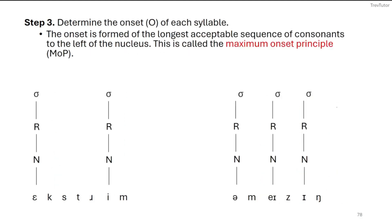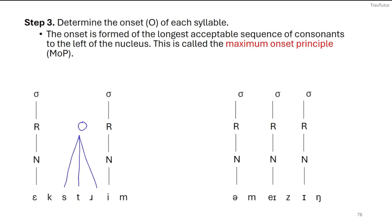Our next step is to form onsets — and we always form onsets before codas. We form onsets by thinking about the longest acceptable sequence of consonants that can be in an onset. This is called the Maximum Onset Principle, also known as the MOP. For 'extreme,' we ask: can we start a word with K-S-T-R? The answer is no — there's no word in English that allows K-S-T-R at the beginning. So K cannot be part of an onset. What about S-T-R? Yes — we can say 'strength,' so S-T-R together are going to form the onset of the second syllable. In the first syllable with E, there are no consonants to the left of the nucleus, so we don't have an onset to consider.